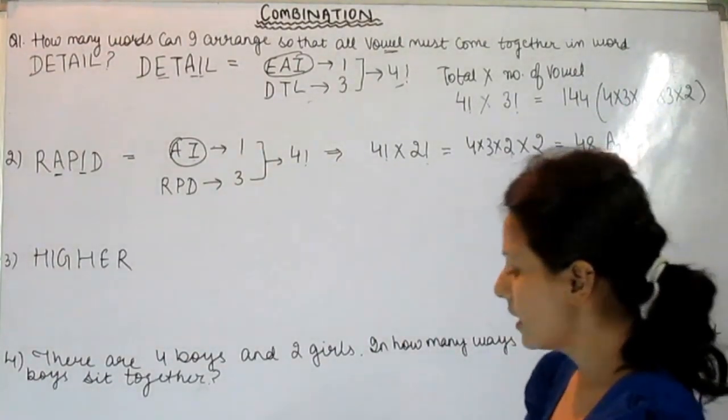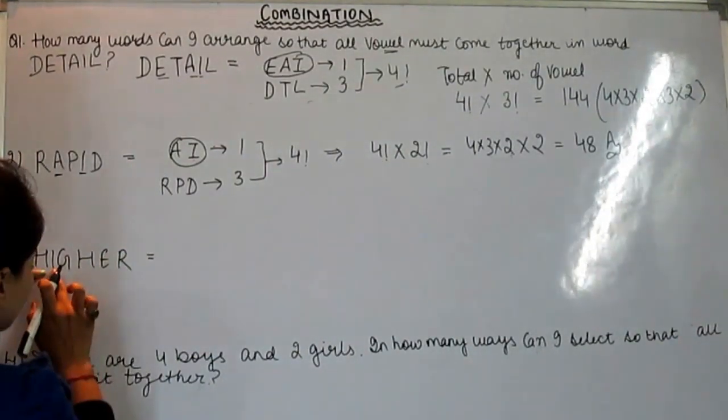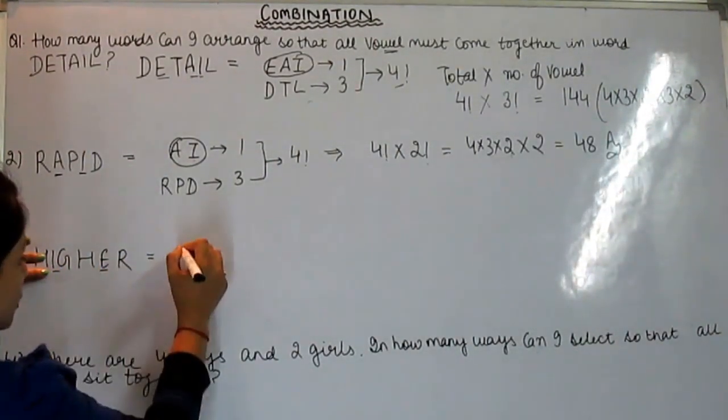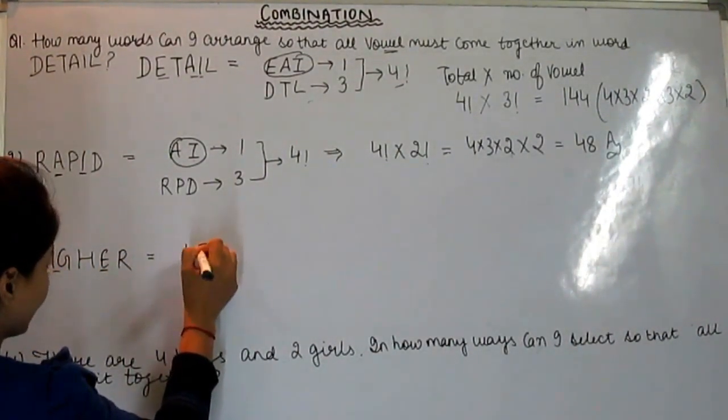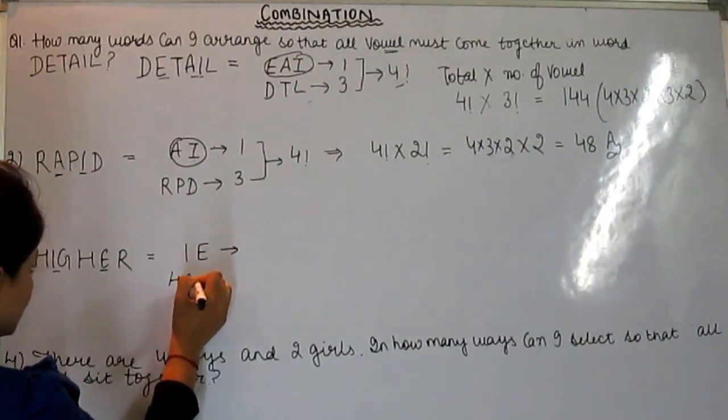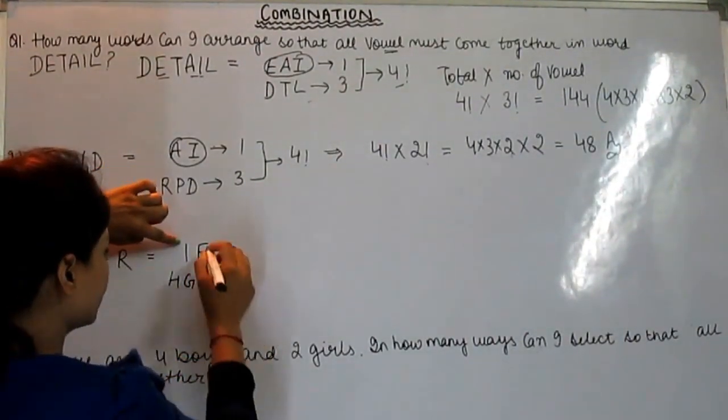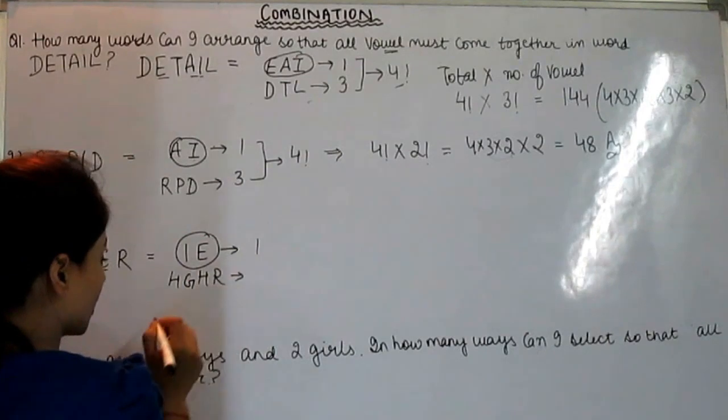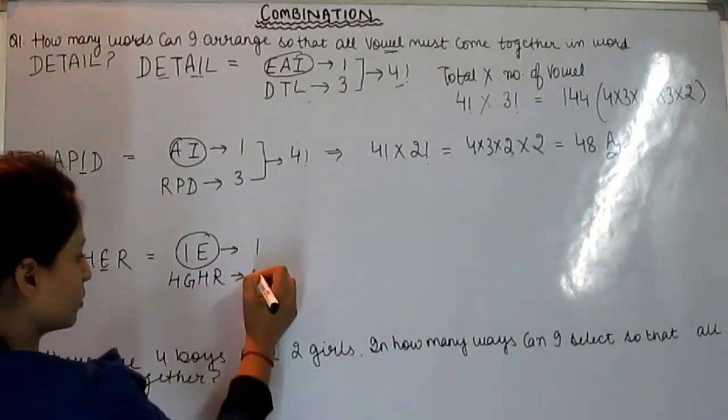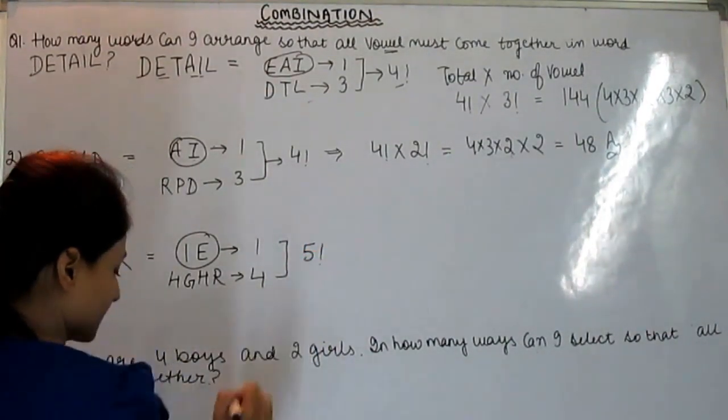Now higher. Higher has 1, 2 vowels: I and E. And consonants: H, G, H, R. I and E we keep together as one group. And H, G, H, R. How many total? Four sections. How many vowels? Five factorial, right?